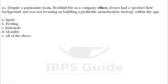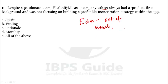Question number 10. 'Despite a passionate team, Healthify Me as a company always had a product-first background and was not focusing on building a profitable monetization strategy within the app.' The bold word is 'ethos.' Ethos means a set of morals — you can also say belief or attitude. So that is called ethos. Spirit is applicable, morality is also applicable, rational is also applicable. That's why the answer will be E — all of the above.